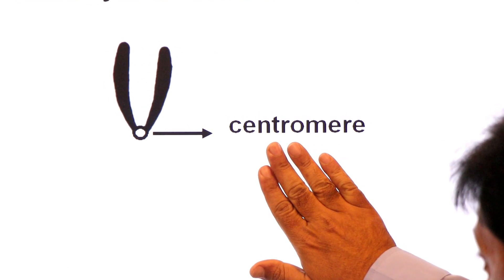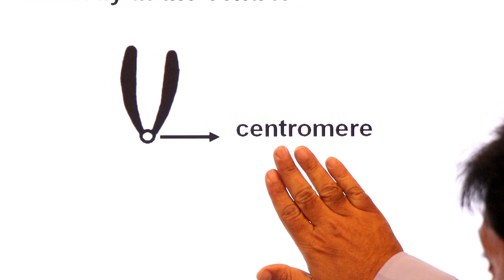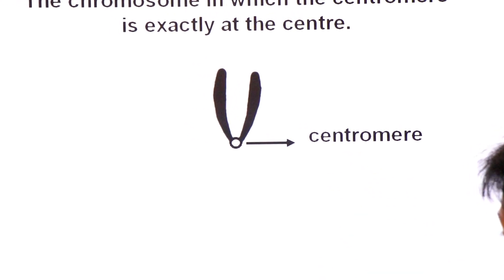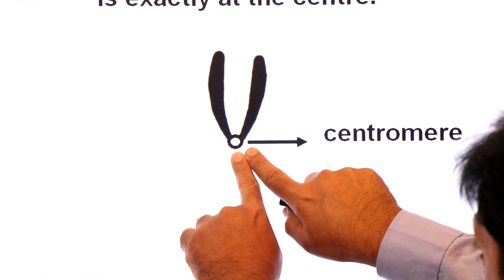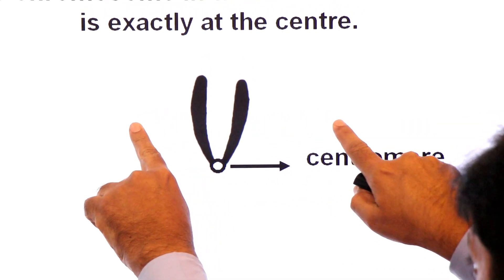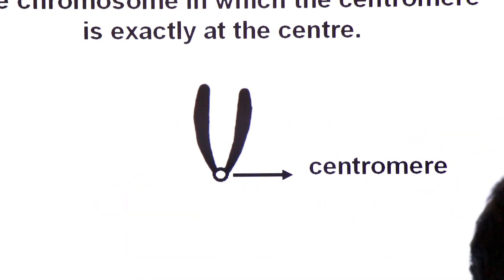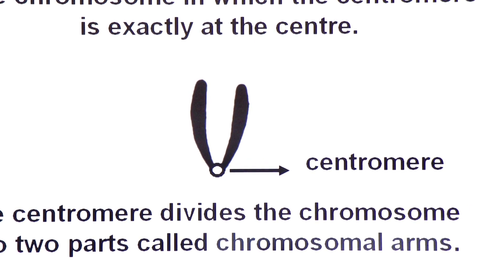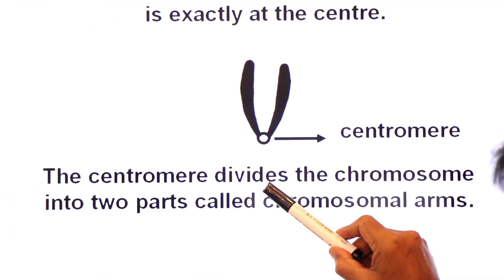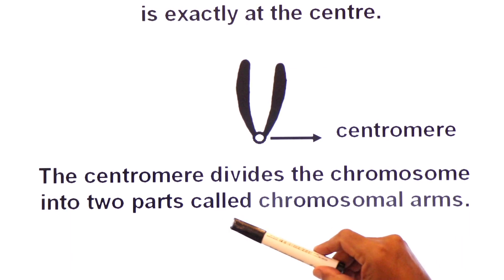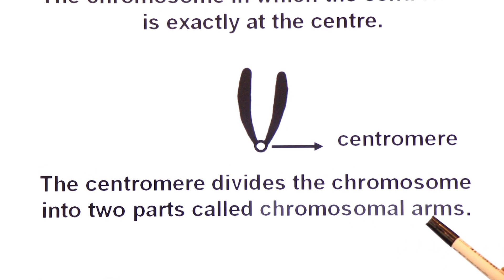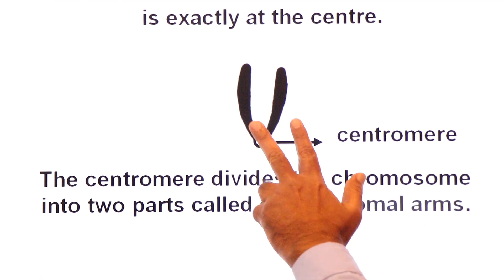When the centromere is exactly at the center, the chromosome is called metacentric. The centromere divides the chromosome into two parts called chromosomal arms.